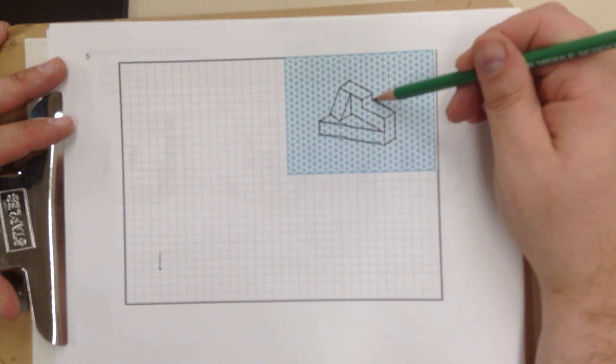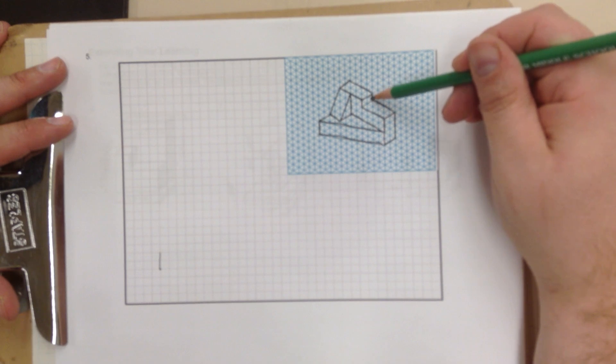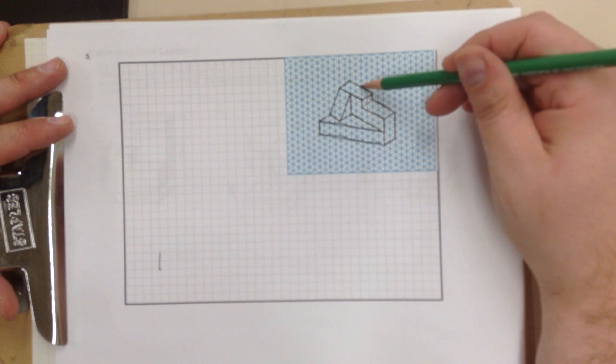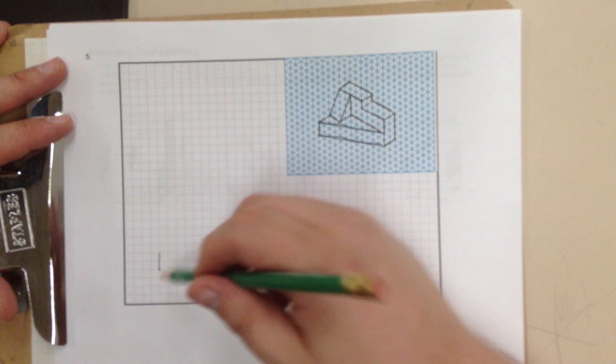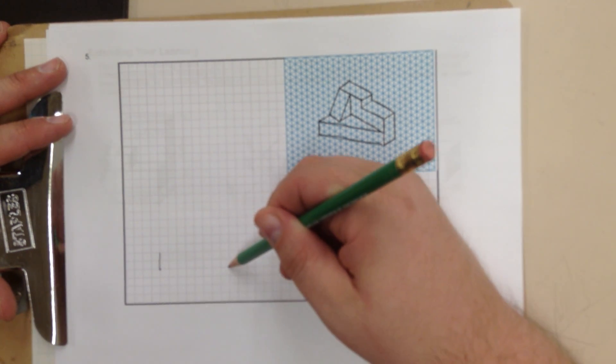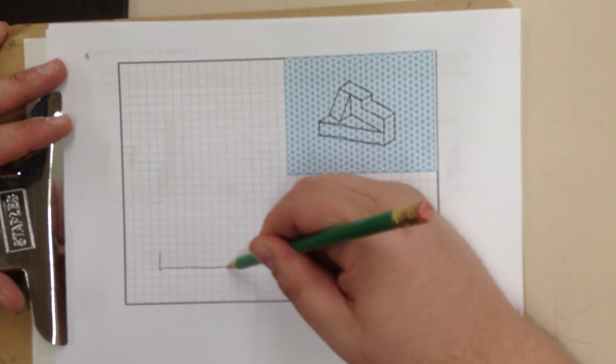1, 2, 3, 4, 1, 2, 3, 4, 5, 6, 7, 8. Let's double check that. 1, 2, 3, 4, 5, 6, 7, 8. So it's 8 long. 1, 2, 3, 4, 5, 6, 7, 8. And that's my bottom edge. Okay?